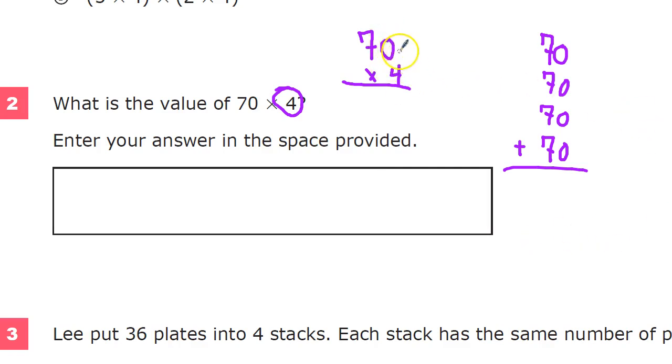So if I'm following the algorithm, I need to multiply the ones place together first. 0 times 4 is, of course, nothing. And then I just need to multiply the tens place times 4. 7 times 4. And again, if you wanted to add, that's fine. 7 plus 7 is 14, plus 7 more is 21, plus 7 more is 28. So I put 28 here and I have 280.